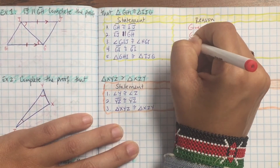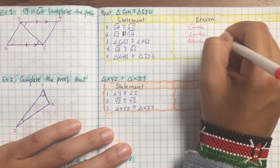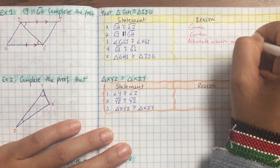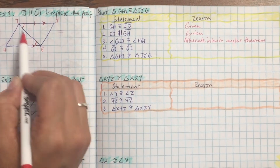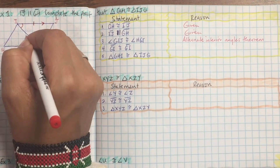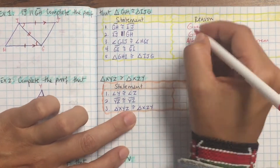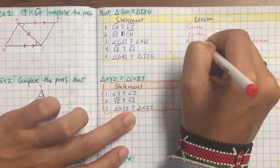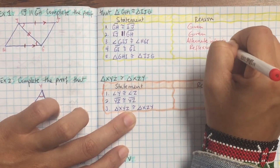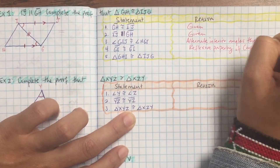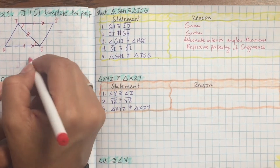The reason is the alternate interior angles theorem. Then why is GI equal to GI? Why is something equal to itself? It's reflexive — when you look in your mirror you don't change. So that line is equal to itself. Put two ticks because one tick was already used. That's the reflexive property of congruence.